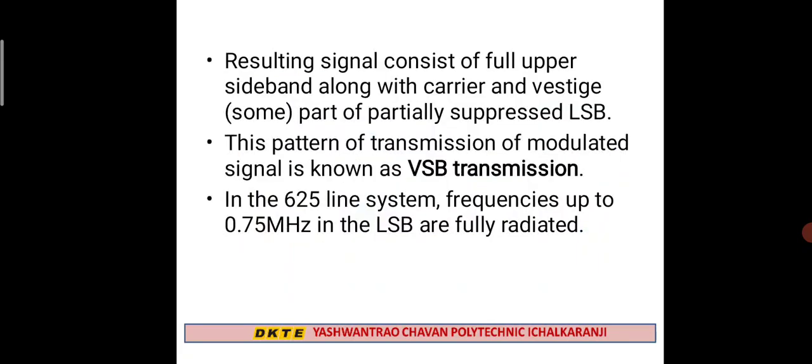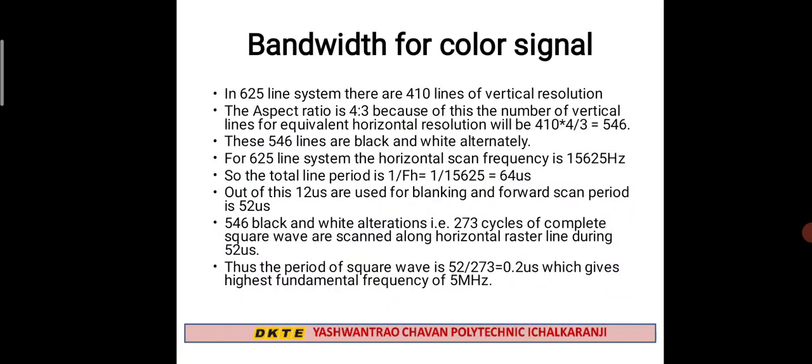The next point is the bandwidth for the color signal. For the 625-line system, 410 lines are the vertical resolution and the aspect ratio is 4:3. The total number of equivalent horizontal resolution elements is 410 multiplied by 4/3. The horizontal frequency is 15,625 Hz, and the line period is 1 divided by frequency, giving 64 microseconds. Of this, 12 microseconds is retrace and 52 microseconds is the active line period.